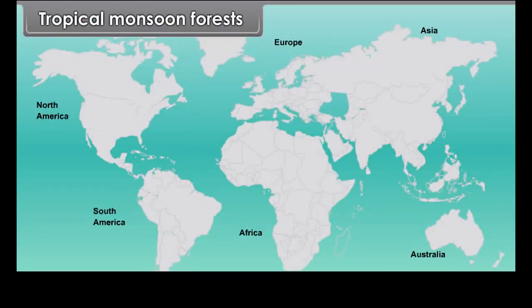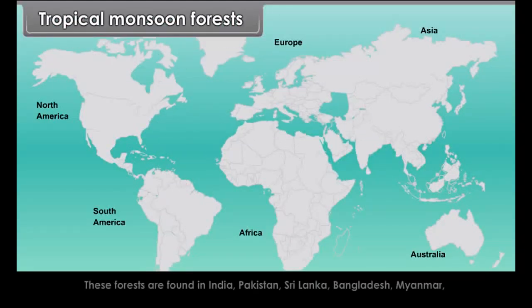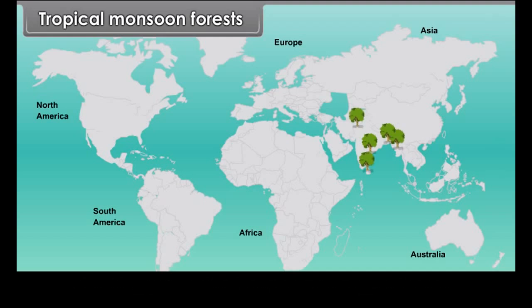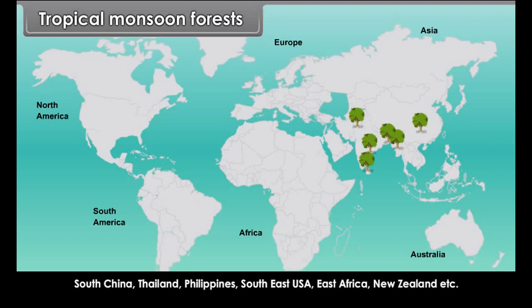Tropical Monsoon Forests. These forests are found in India, Pakistan, Sri Lanka, Bangladesh, Myanmar, South China, Thailand, the Philippines, Southeast USA, East Africa, New Zealand, etc.